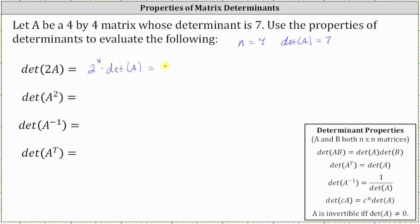Two to the fourth is equal to 16. The determinant of matrix A is equal to seven. 16 times seven is equal to 112.